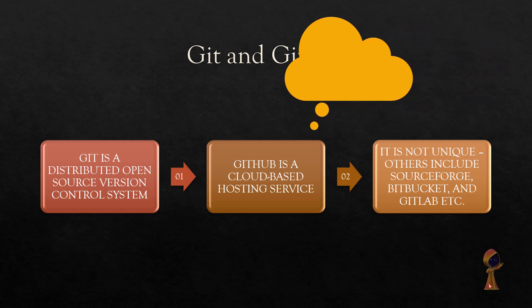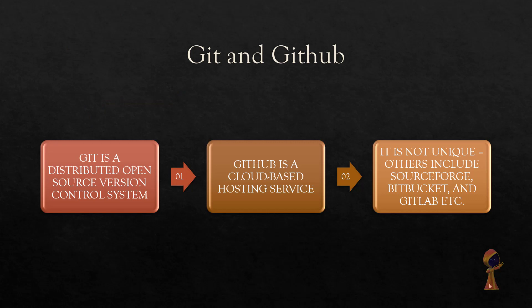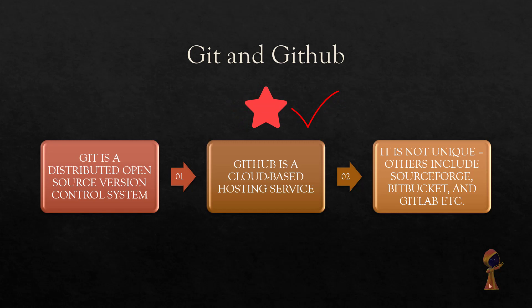You get a free account where you can upload your software and collaborate with others — it could be anything you want to collaborate with. It used to be that GitHub did not allow private repositories for free, but now that's not the case, so you can even have private repositories for you and your collaborators. It's not unique though — there are other Git sources such as SourceForge, Bitbucket, and GitLab, all with different benefits, pros and cons.